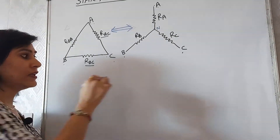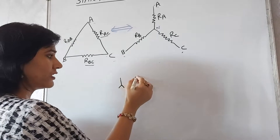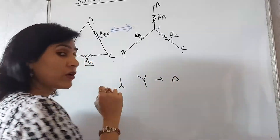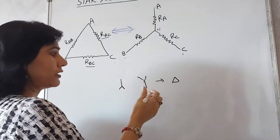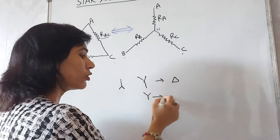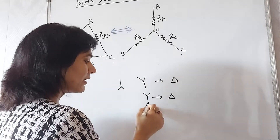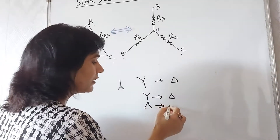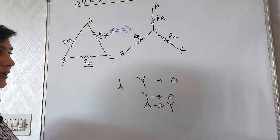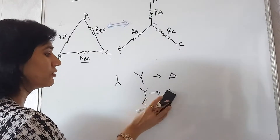In star — which is also known as a Y connection — or in delta, we always find the equivalent circuit. If we have a star connection, we find its equivalent delta. Or if we have a delta connection, we find its equivalent star. I am discussing this with one example.